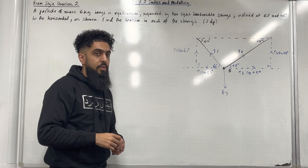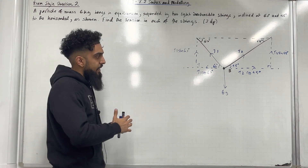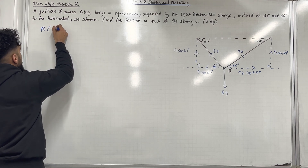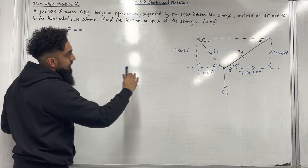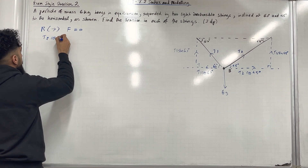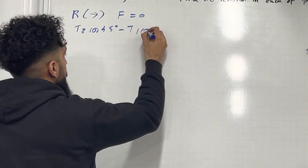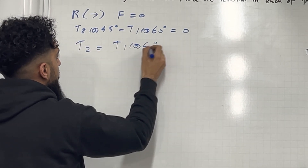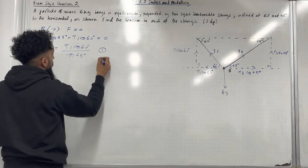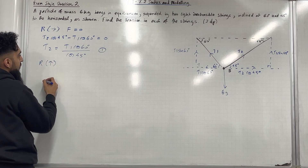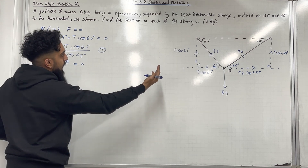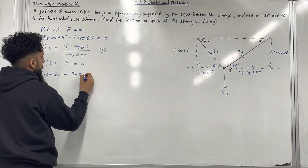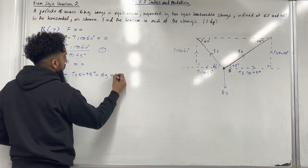To work out T1 and T2, I need to generate simultaneous equations. Particle B is in equilibrium, so the resultant force acting horizontally and vertically equals zero. Resolving horizontally, taking right as positive: T2 cos 45° minus T1 cos 60° equals zero, so T2 equals T1 cos 60° divided by cos 45° — call this equation one. Resolving vertically, taking upwards as positive: T1 sin 60° plus T2 sin 45° minus 6g equals zero — equation two.